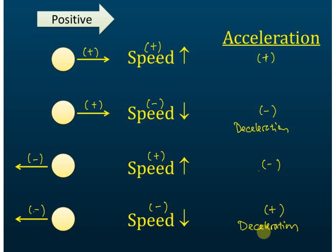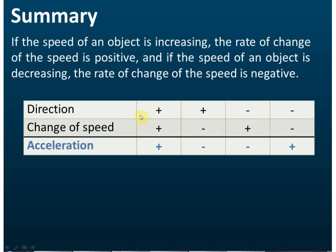Next time when you see negative acceleration, don't immediately think the object must be undergoing deceleration, because the positive or negative sign of acceleration depends on the direction of motion and how the speed changes. Summary: for acceleration, if the direction of motion is positive and the change of speed is positive — meaning speed increases — then the acceleration is positive.